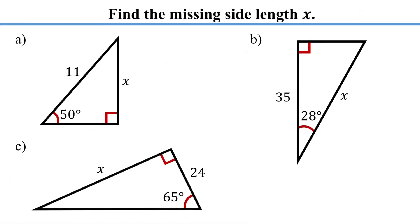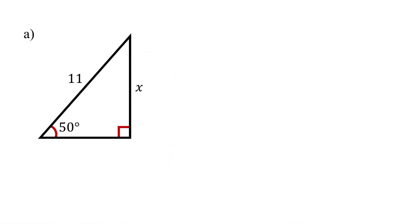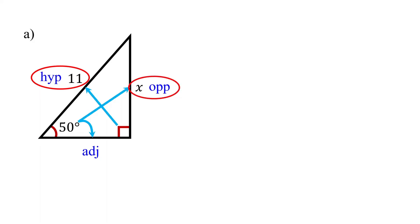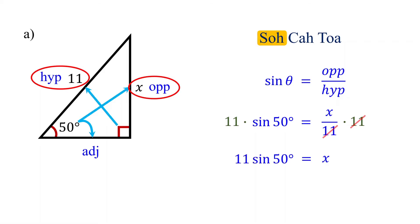How do you find a missing side length when given one angle and one side length? Label the sides with respect to the given angle. Opposite the right angle is the hypotenuse; opposite the 50-degree angle is the opposite side; the remaining side is the adjacent side. The hypotenuse is given and we are asked to find the opposite side. It is the sine function that relates the opposite side with the hypotenuse, so sine of 50 degrees equals x over 11. Multiply both sides by 11: x equals 11 times sine of 50 degrees.